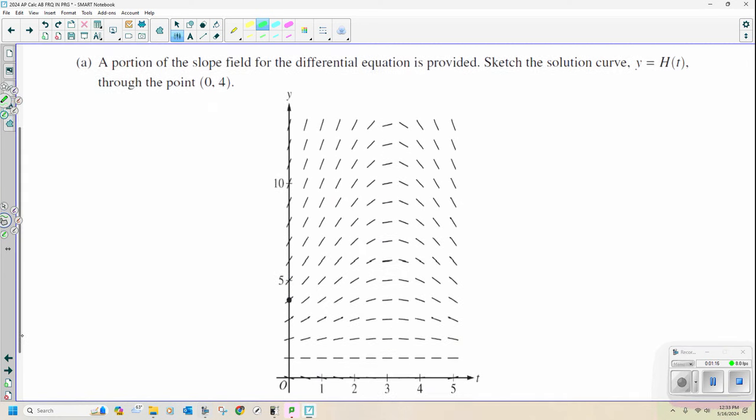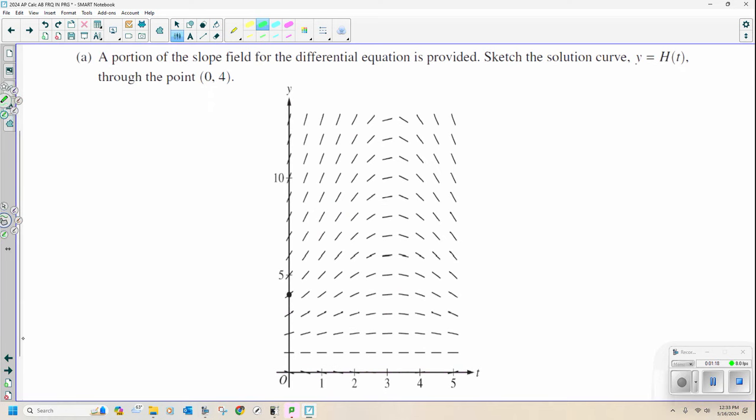My God. Free response question one was easy. Free response question two was easy. And they are starting out with a layup. Easy. The point zero four is already on the graph. We've just got to draw a line that goes through it.